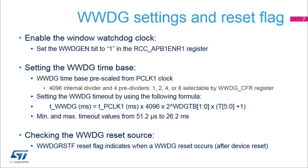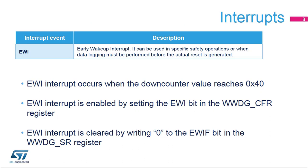Once the window watchdog generates a reset, a status flag WWDGRSTF is set in the RCC CSR register identifying the source of the reset. The early wake-up interrupt can be used for specific safety operations or when data logging must be performed before the actual reset is generated. The EWI interrupt occurs whenever the down counter value reaches 0x40. It is enabled by setting the EWI bit in the WWDG CFR register.